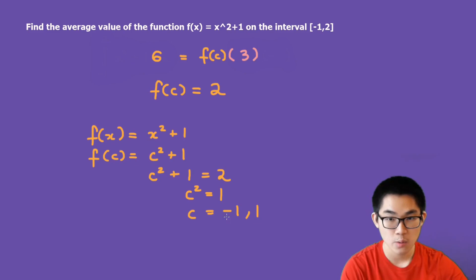So in conclusion, we found out that the average value is 2. So this is the answer. And if they want you to find where this value occurred, then the answers are c is equal to negative 1 and 1.